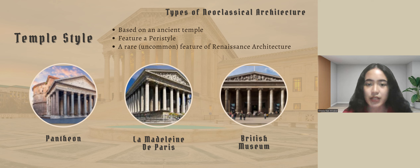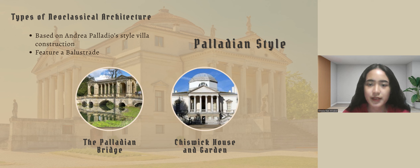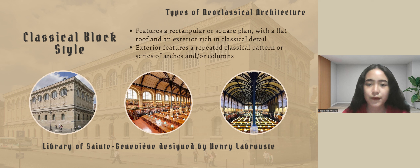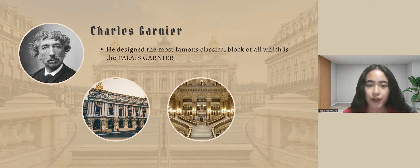The Palladian style is based on Andrea Palladio's style of villa construction. Some buildings feature a balustrade — a railing with vertical supports along the edge of the roof. Examples include the Palladian Bridge and Chiswick House and Gardens. The Classical Block style features a rectangular or square plan with a flat facade and an exterior rich in classical detail, including repeated classical patterns or series of arches or columns. The Library of Sainte-Geneviève is an example designed by Henri Labrouste, and the famous Palais Garnier, a neo-Baroque opera house, is one of the most famous examples, designed by Charles Garnier.